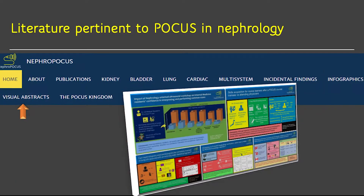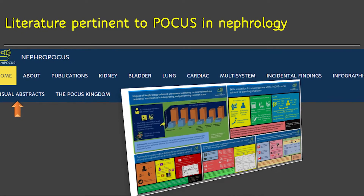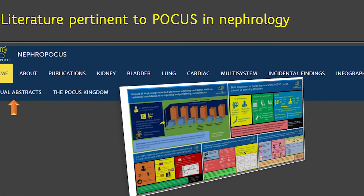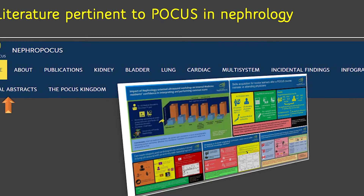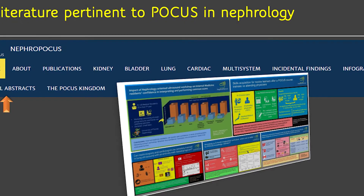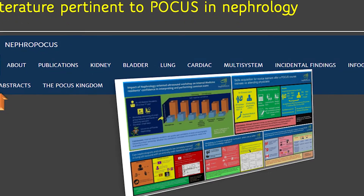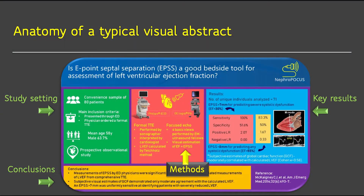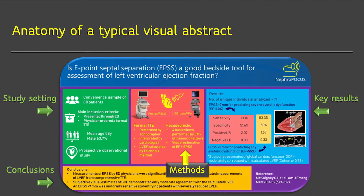In the visual abstract section, literature supporting the use of POCUS is presented in the form of concise pictorial and visual summaries. Abstracts are organized by category, such as studies related to ESRD patients, heart failure, etc. A visual abstract typically comprises a brief description of the study setting, methods, results, and conclusions.